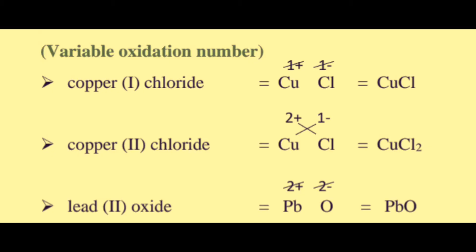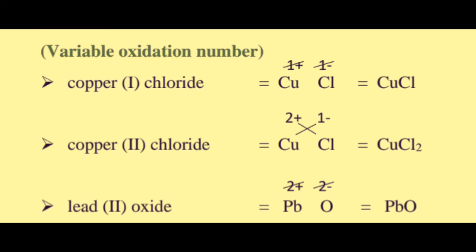For copper(II) chloride, Cu has oxidation number 2 plus and Cl has oxidation number 1 minus. After crossing, the formula is CuCl2.